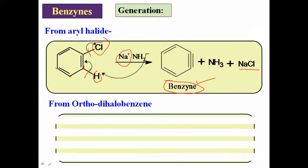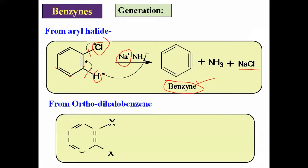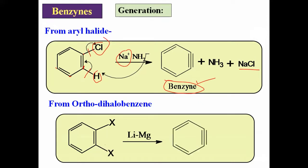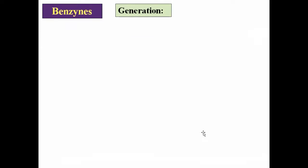Second method: from ortho-dihalobenzene. When a compound having two halogen atoms at ortho positions is treated with lithium-magnesium alloy, there is a removal of both halogen atoms, and a triple bond forms between those two carbons, giving benzyne. This is a simple method.